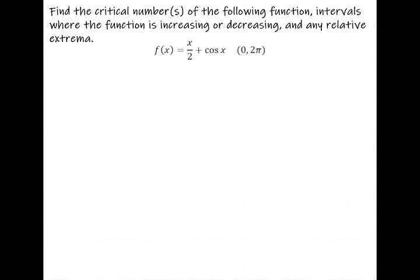Find the critical numbers of the following function, the intervals where the function is increasing or decreasing, and any relative extrema. A critical number is a value in the domain — in this case all numbers between 0 and 2π, not including 0, not including 2π — where the derivative is either equal to 0 or undefined.